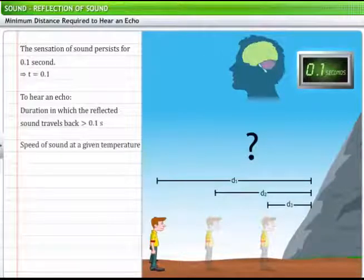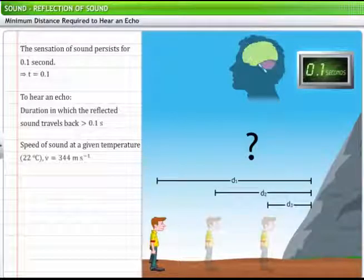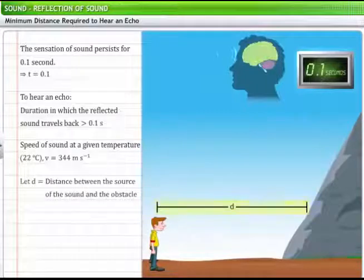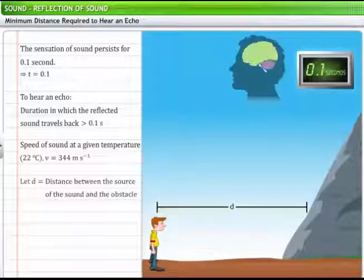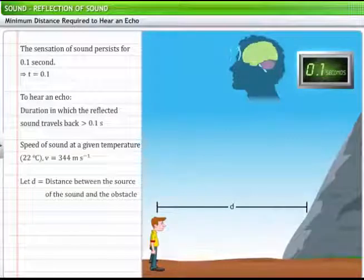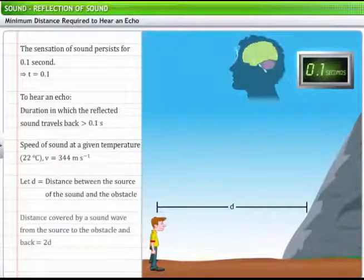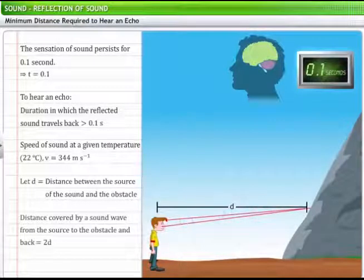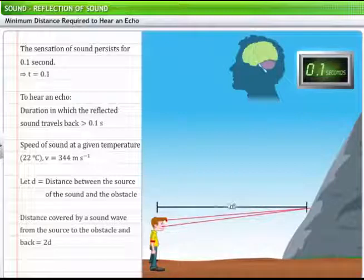The speed of sound at a given temperature, say 22 degrees Celsius, is 344 meters per second. Consider the echo produced by shouting on a cliff. Let D be the distance between the source of sound, in this case the man, and the obstacle, in this case the cliff. The distance traveled by the sound wave from the source to the obstacle and back to the source is equal to 2D.